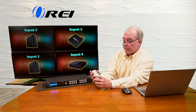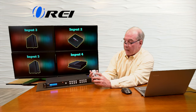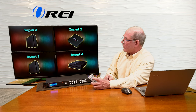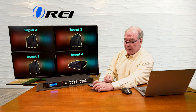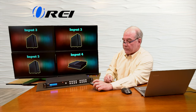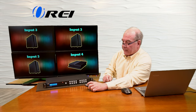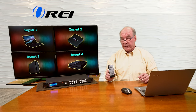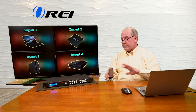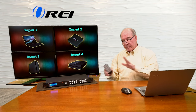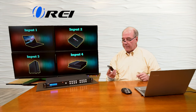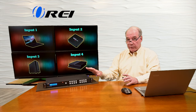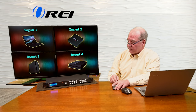I can change input number two by dropping down to output two and changing that to maybe input number three. You can see it changes. I can go back to output A, put that back on one, put this back on two. So this gives you a really quick way to access both the inputs and outputs and make those changes on the fly, but there's not a lot more you can do. If you need more control, you can use the buttons on the front of the unit.